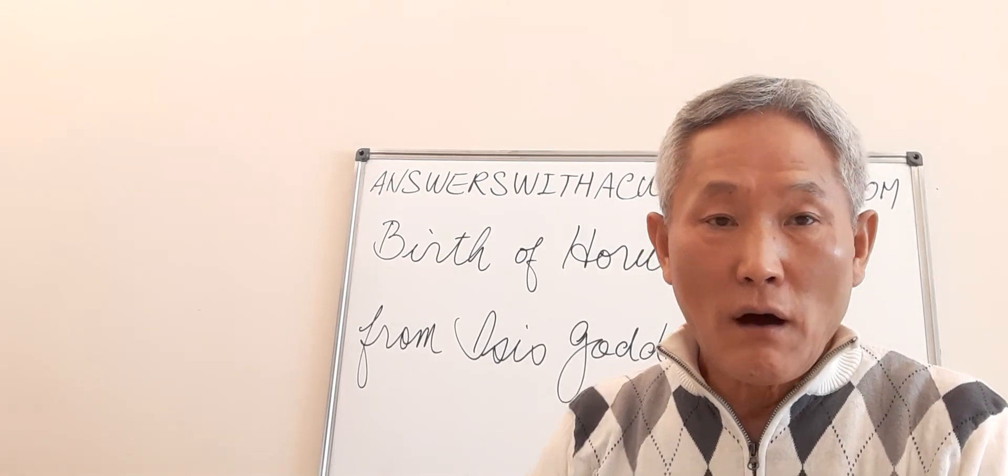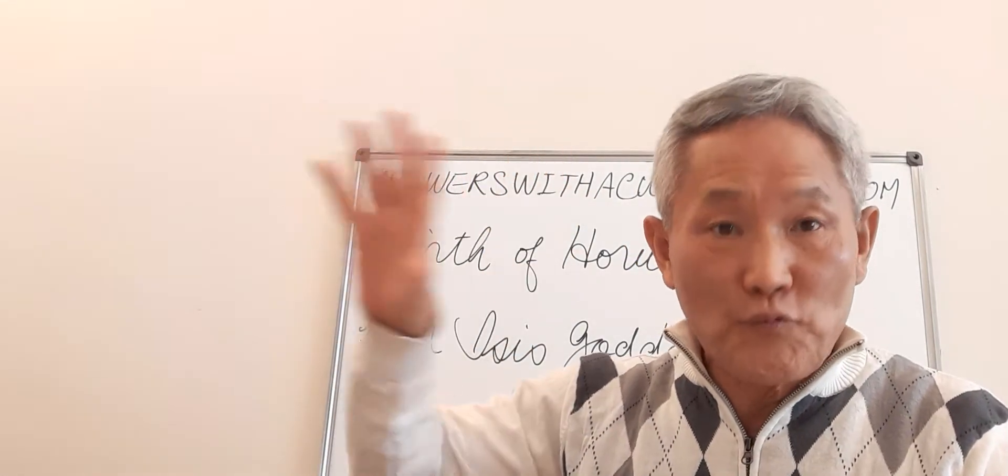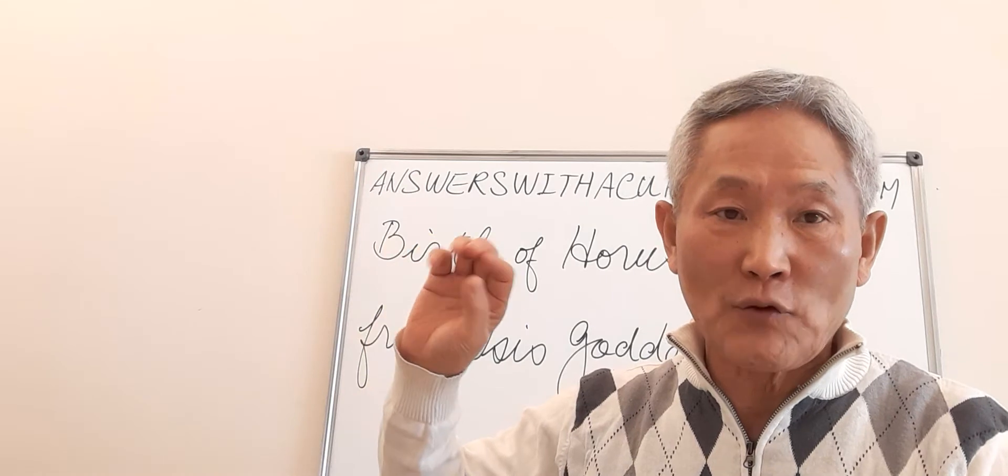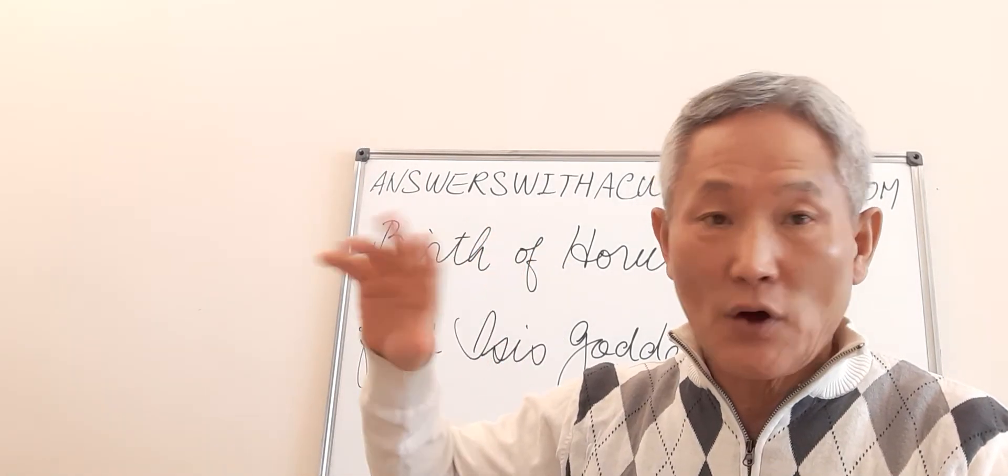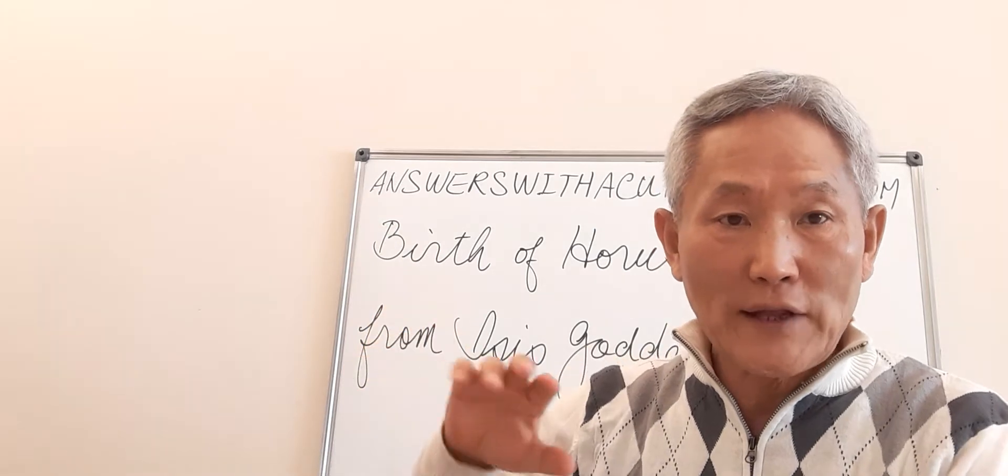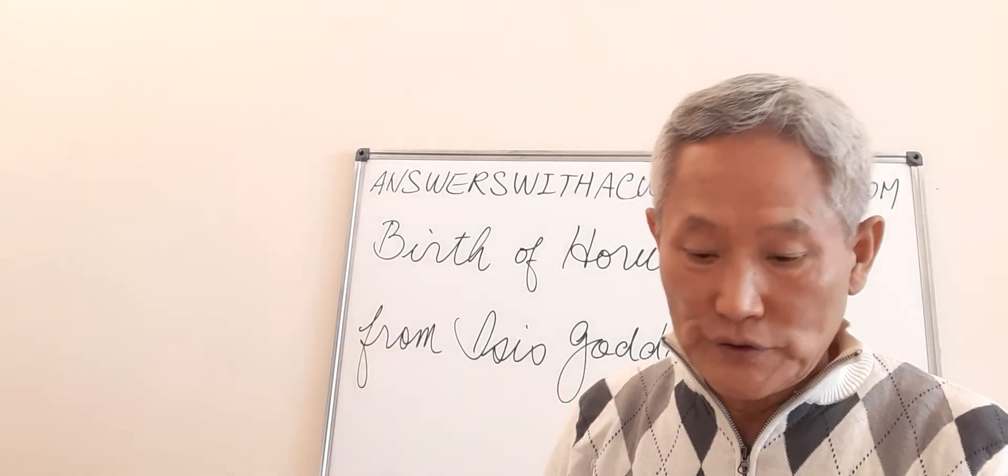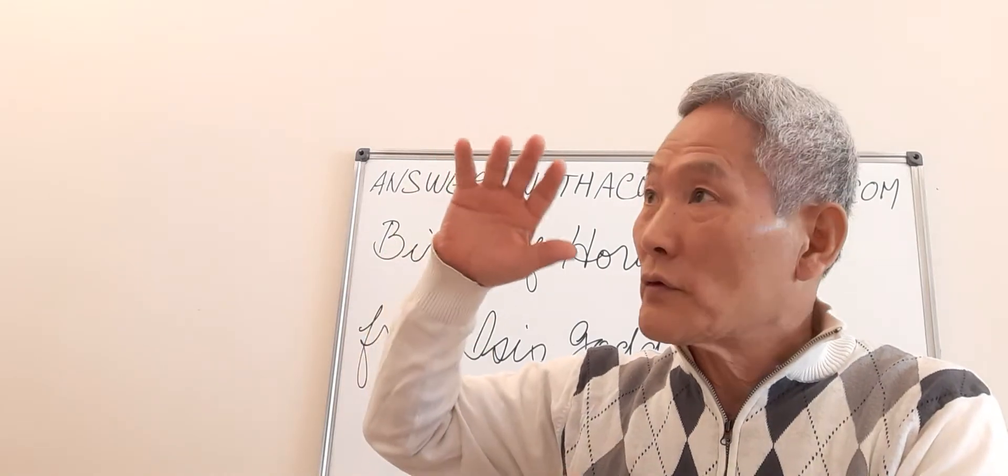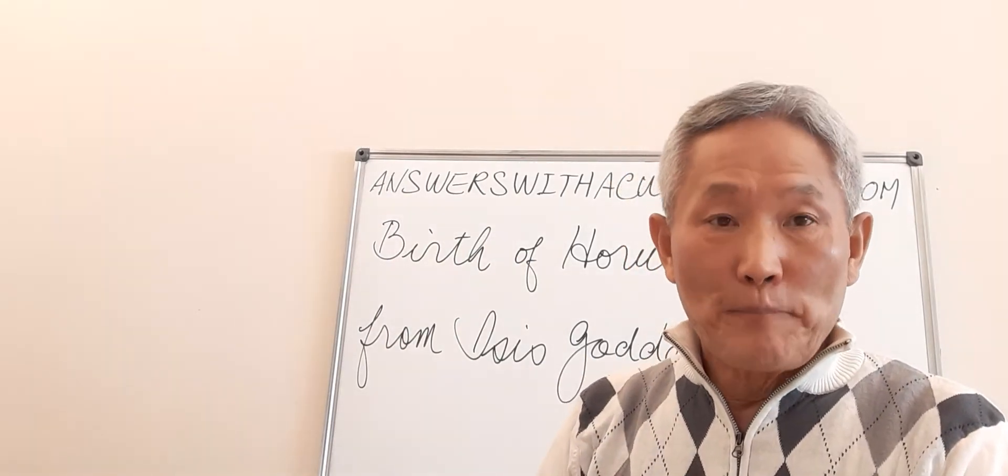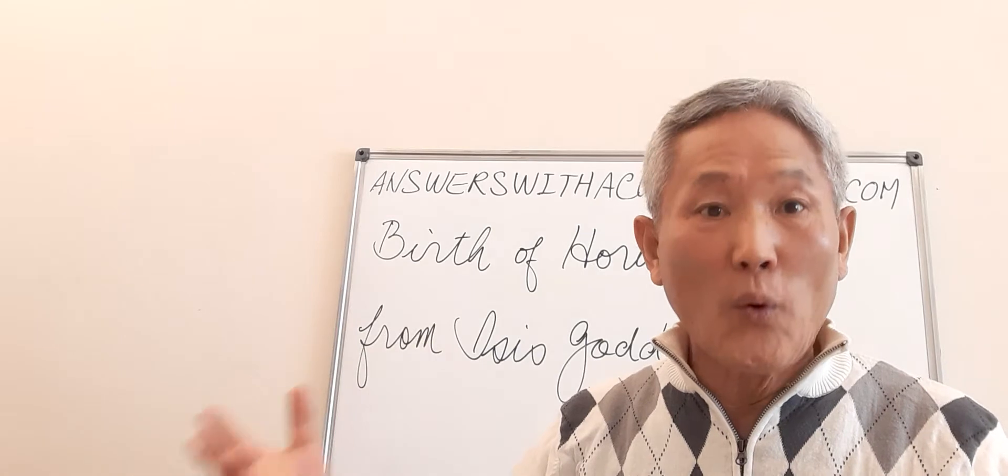What they found was this Rosetta Stone had the same message, same meaning, written with three different languages: one is Greek, the second one is Egyptian language in the royal group, and another one is Egyptian language normal people used. Everything is the same, just three different languages. After this, many people can understand all the languages.